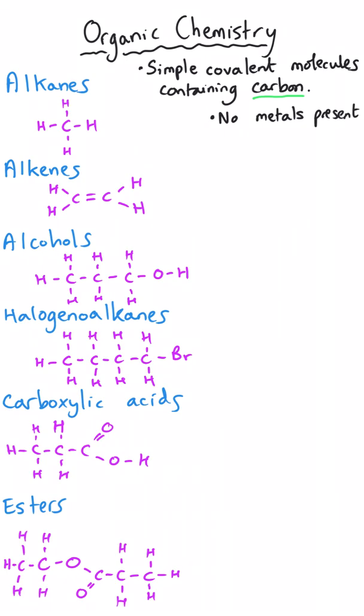There are all sorts of different families of carbon compounds, ranging from the simple hydrocarbons up at the top here, the alkanes and the alkenes. We know they're hydrocarbons because they only contain hydrogen and carbon, and then we range onto more complicated families of chemicals such as alcohols, halogeno alkanes, carboxylic acids and esters.